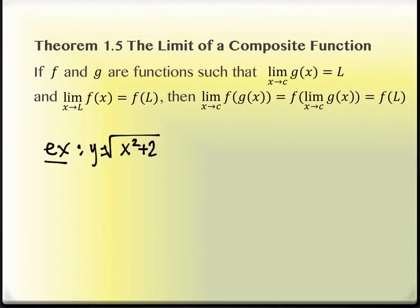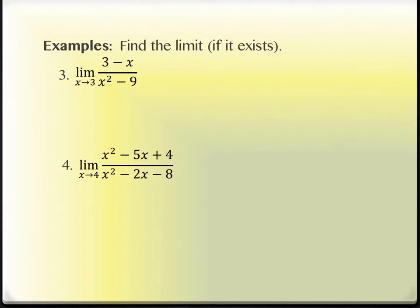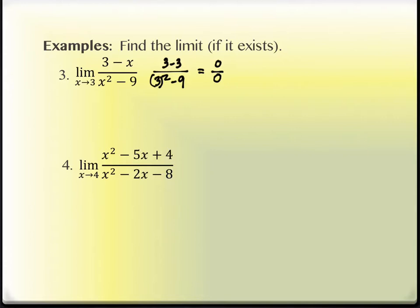Now let's look at a problem that has a problem — because I keep telling you it's going to happen. Our goal is to plug the values in, but the problem occurs when we try to do that and get zero as both the numerator and denominator. If we just got zero in the denominator and the numerator was, say, five, that would be does-not-exist and we'd be done. But zero over zero is a very specific indeterminate case.